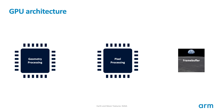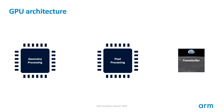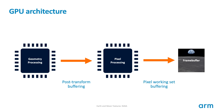The core components in any architecture are the two processing stages and the output frame buffer used to store the results of pixel processing. These three must be linked together with some type of data transfer. There is some type of post-transform buffering which must contain the output of the geometry processing before handing over to pixel processing, and some type of pixel buffering of the current frame buffer working set — color, depth, and stencil samples needed for ZS testing, blending, and multi-sampling.